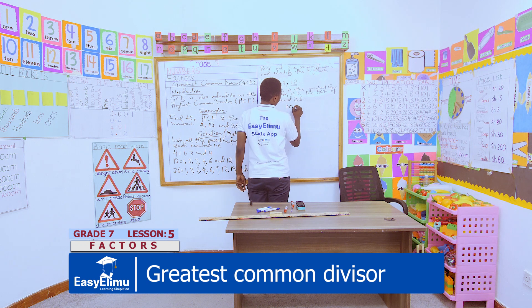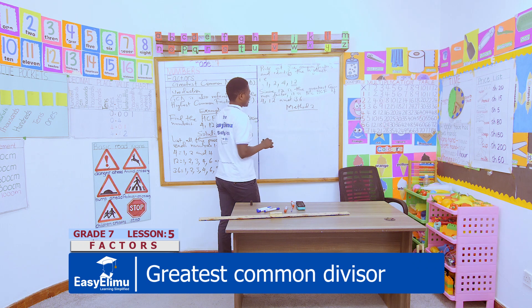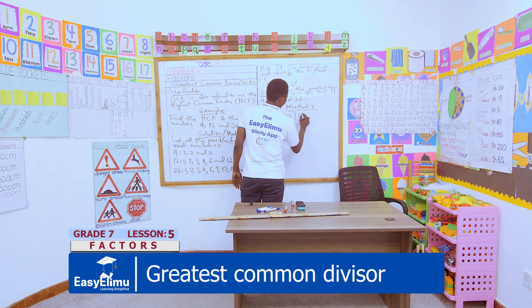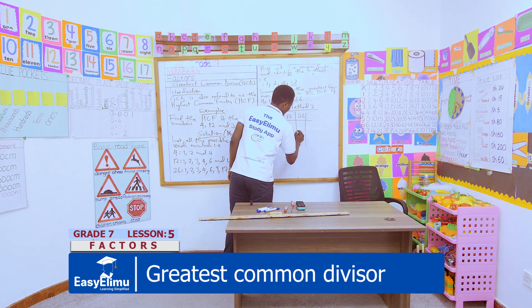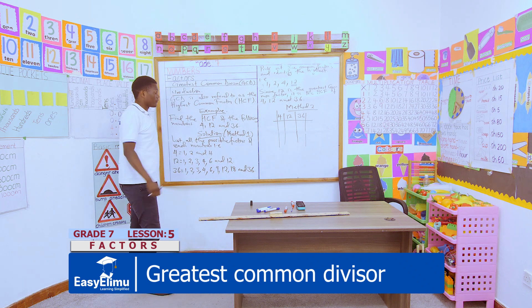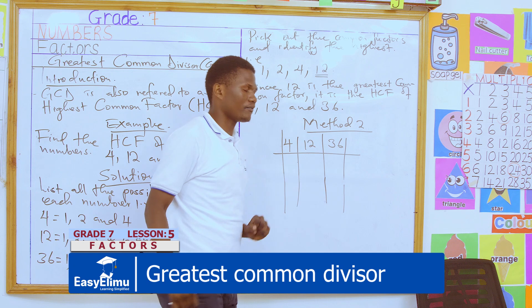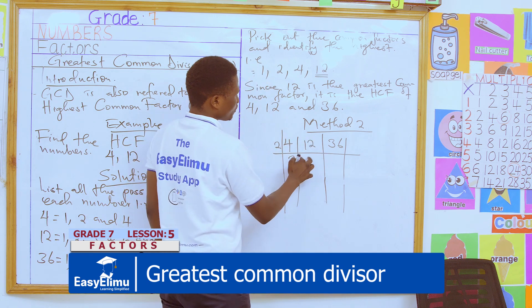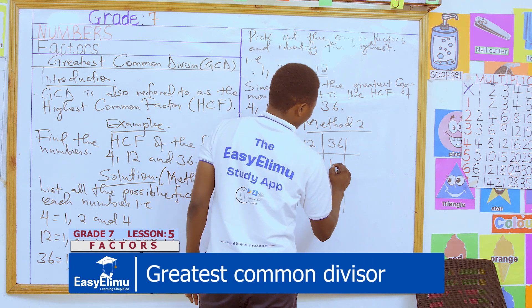Method 2: we write the numbers horizontally — 4, 12, 36 — separated by a table. Then we identify the first prime number that is a common factor to all of them, and that is 2. 2 into 4 is 2, 2 into 12 is 6, 2 into 36 is 18.